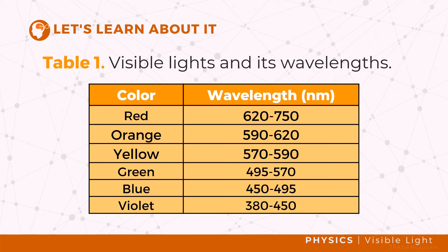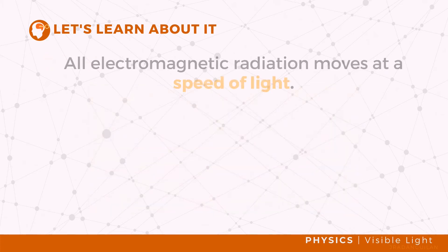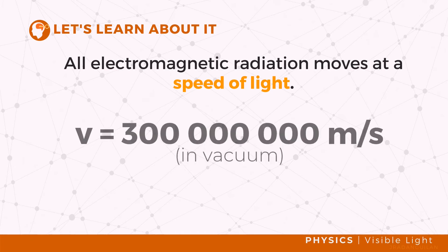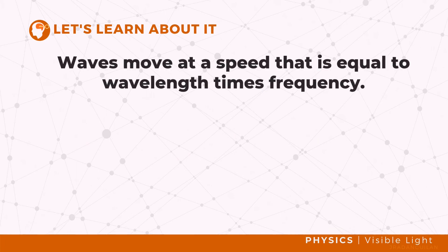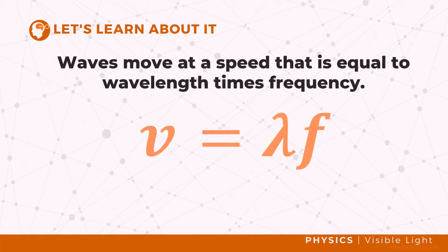All electromagnetic radiation moves at the speed of light, which is the highest possible speed. The speed of light in a vacuum is equal to 300 million, or 3 × 10⁸ meters per second. Waves move at a speed equal to wavelength times frequency, and this product will be equal to the speed of light for any electromagnetic radiation.